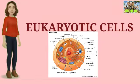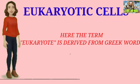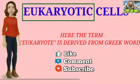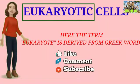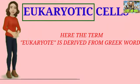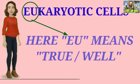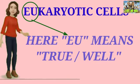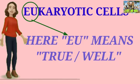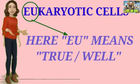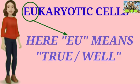Eukaryotic cells. The term 'eukaryotic' is derived from a Greek word. Here 'eu' means true — that is, 'eu' means true, which is nothing but 'such' — and 'well' here means well-defined nucleus. So it means true and well-defined.